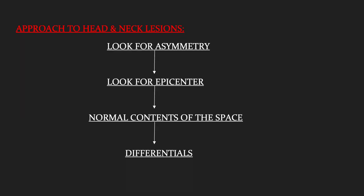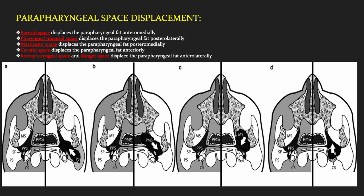Coming to the approach for head and neck lesions: first we should look for asymmetry to determine at what level and site the lesion is located. Then identify the epicenter, analyze the normal contents of that space, and think of a differential. An important aspect is to look for the displacement of the parapharyngeal fat. If the mass is in the parotid space it displaces the parapharyngeal fat anteromedially. If in the pharyngeal mucosal space, it displaces fat posterolaterally. If in the masticator space, it displaces fat posteromedially. If in the retropharyngeal or danger space, it displaces fat anterolaterally.